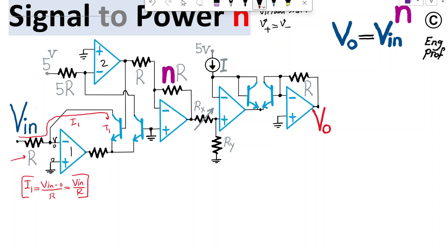So what is that current I1, let's say? The current I1 is simply VIN minus 0, the two voltages across this resistor, divided by R. So it's just simply VIN divided by R. Okay, so that's I1.